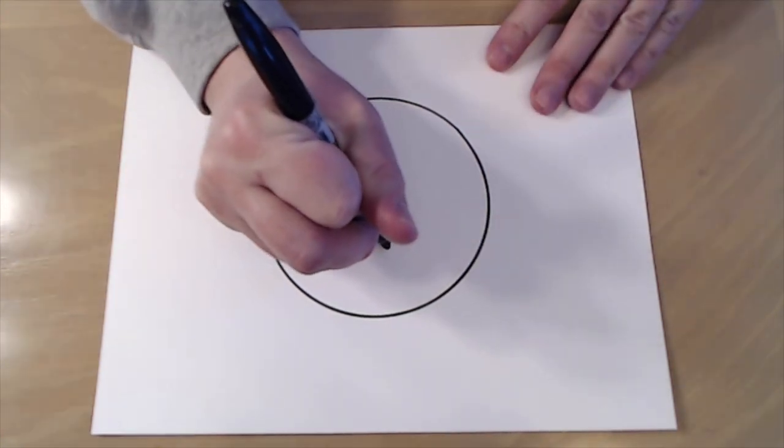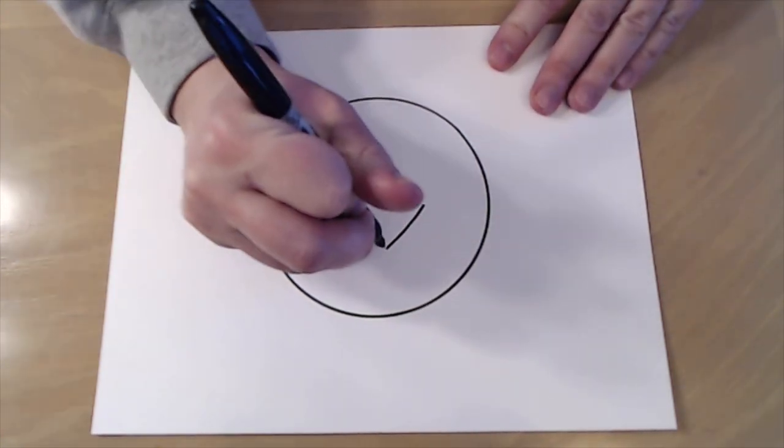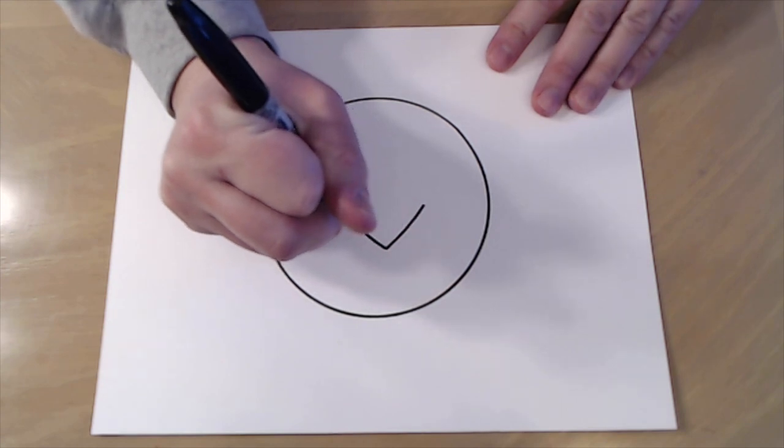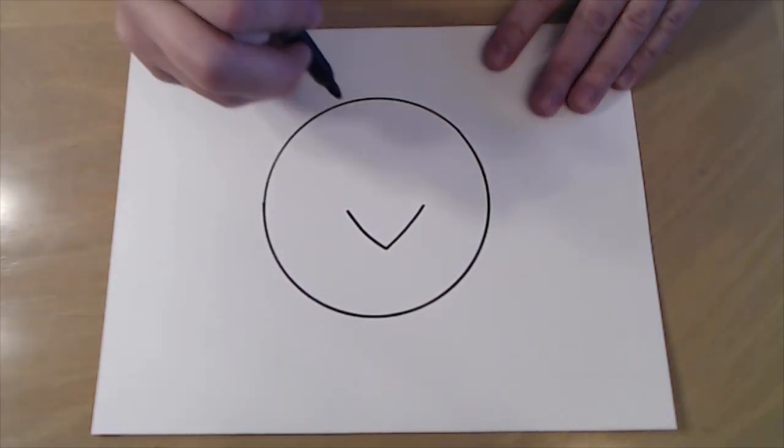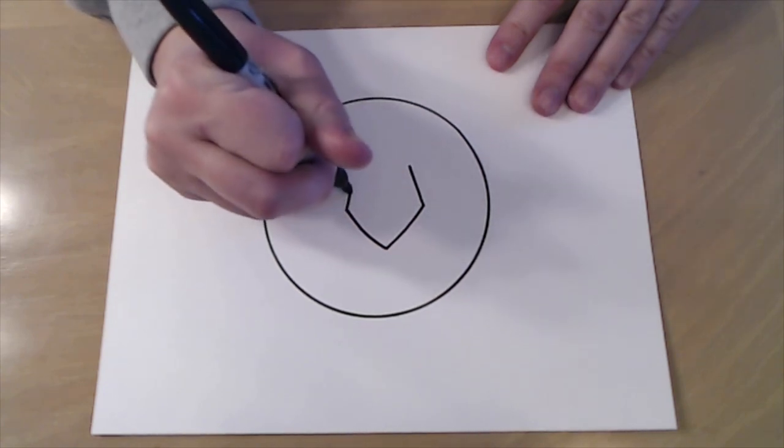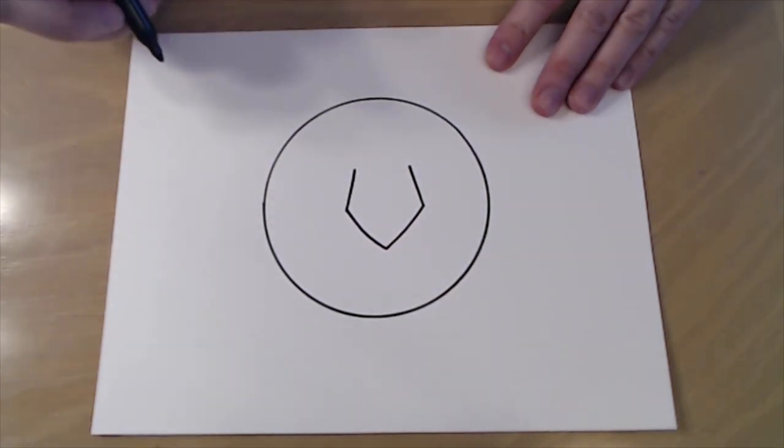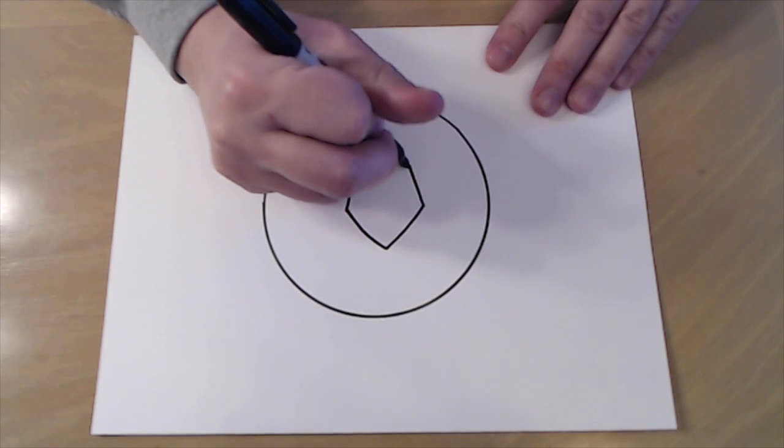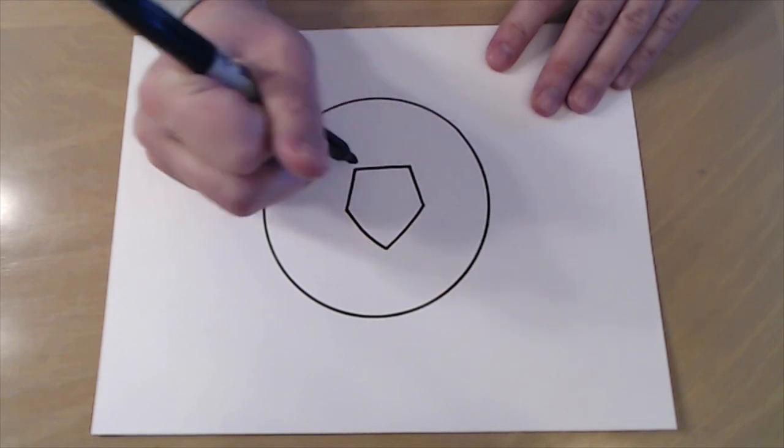So I'm going to start right here and I'm just going to make two lines like that and then two more lines kind of down at an angle and then I'm just going to connect these right here.